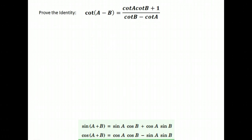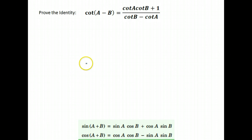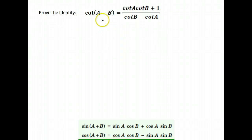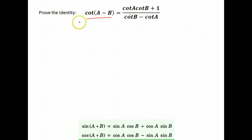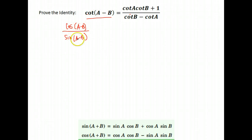Here is another example. We're asked to prove the identity that cotangent of A minus B equals cotangent A times cotangent B plus 1, over cotangent B minus cotangent A. We don't have any identities for cotangent sum or difference, so it will be easier to expand the left side. Cotangent is cosine over sine, so I'm going to change this to cosine of A minus B over sine of A minus B, since cotangent of an angle is the cosine divided by the sine of that angle.